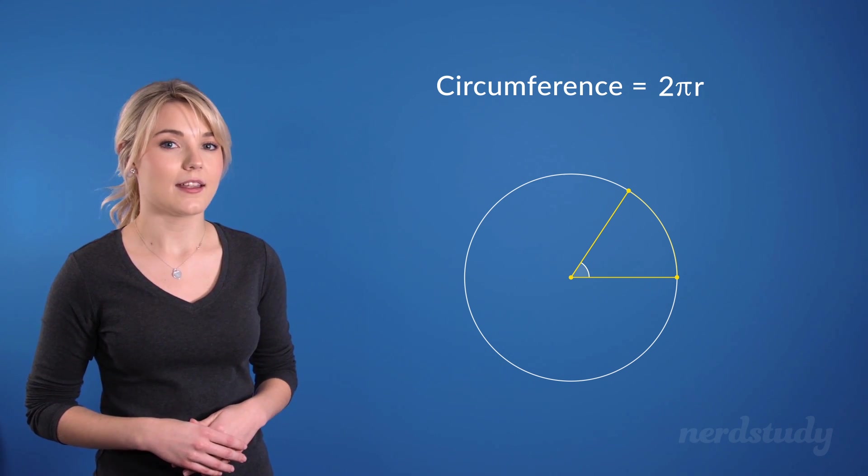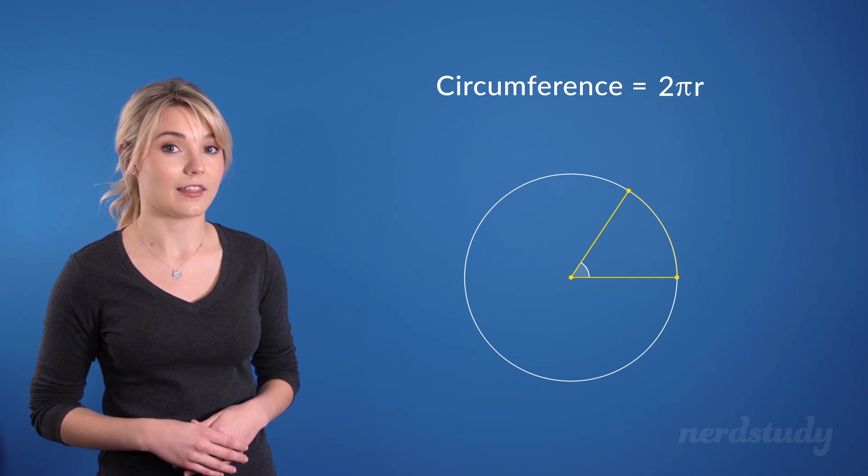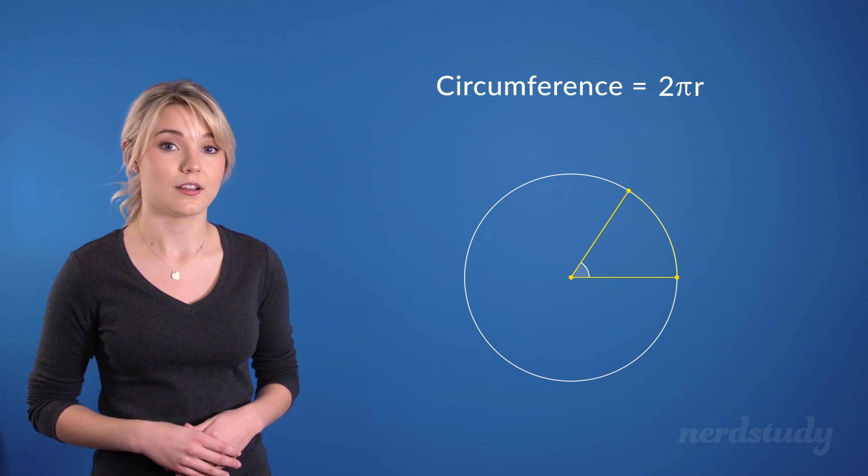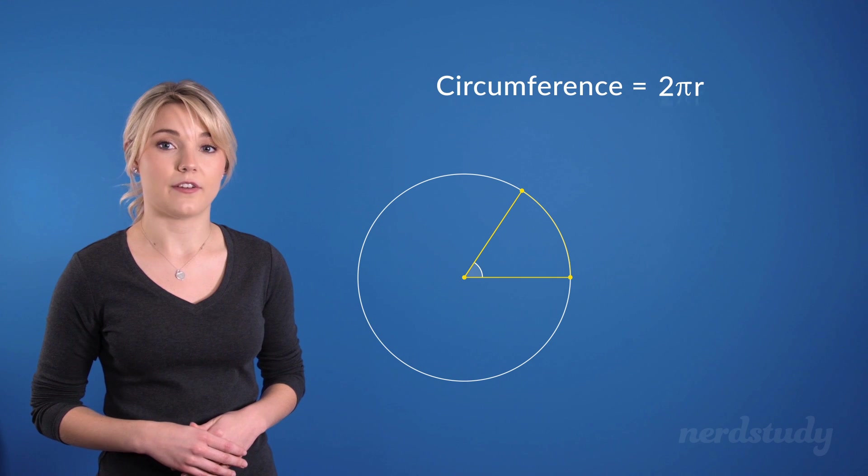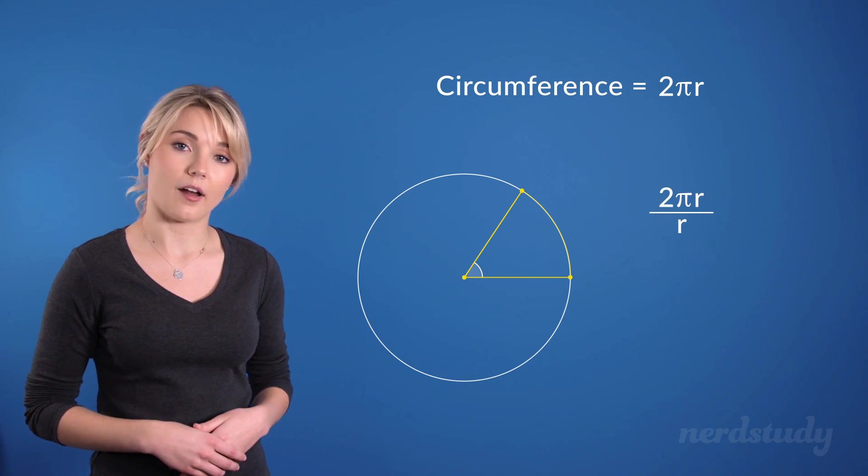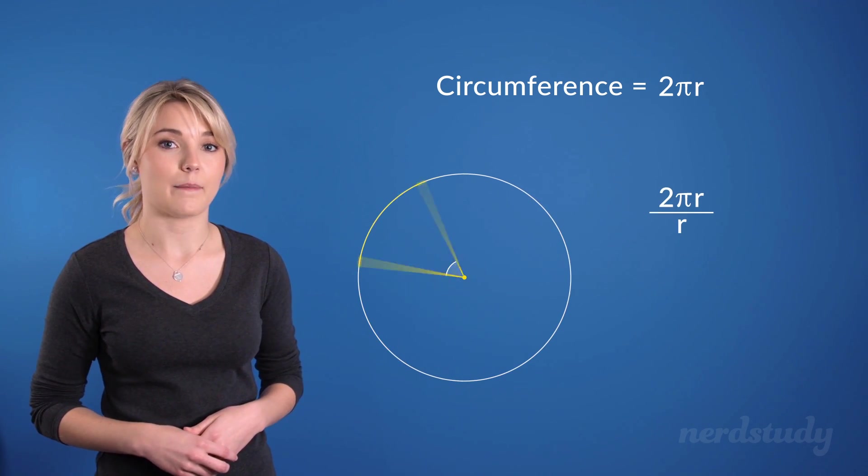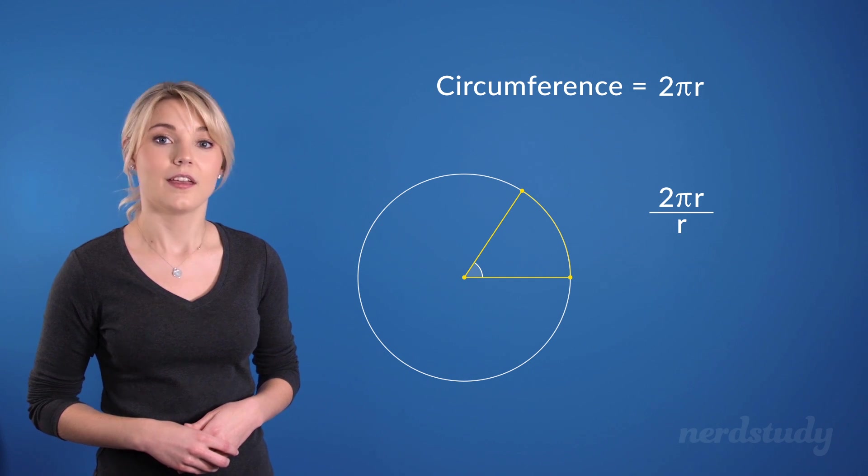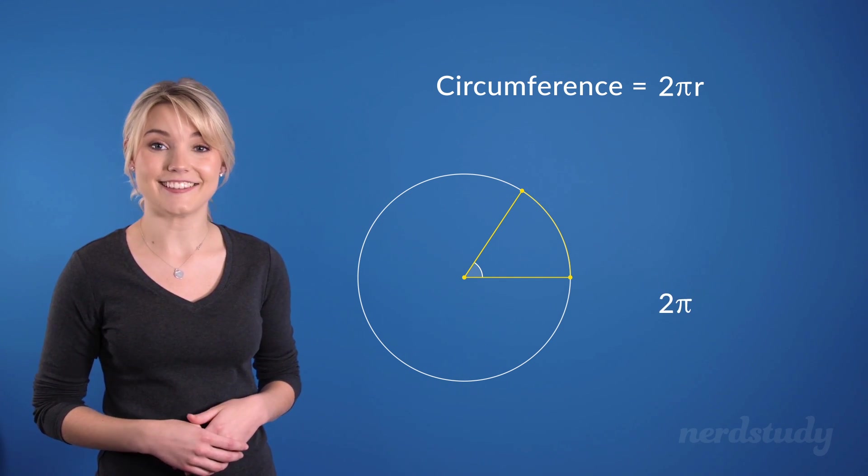And since the radian itself is defined as the angle that makes up an arc length exactly the same as the radius, all we would have to do is divide 2 pi r by r to get the number of radians that make up the full circle. Therefore, the answer is just 2 pi. Easy.